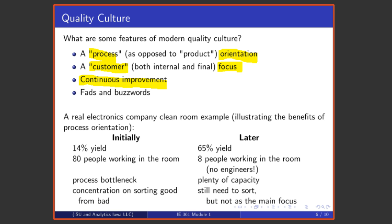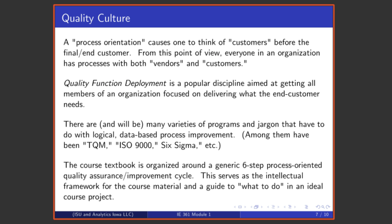And instead of 14 percent, there was 65 percent yield. That's like getting several new clean rooms with no capital investment, and cutting down on waste was a great result. Instead of 80 people working in the room, it only required eight. That's a huge savings in labor cost. There was plenty of capacity once the process was improved and was running appropriately. There was still a need to sort good chips from bad chips, but the production of good chips was the fundamental means of producing a product, not sorting good from bad.